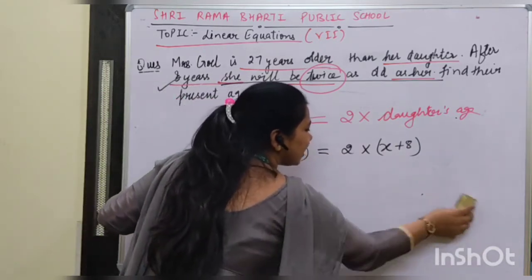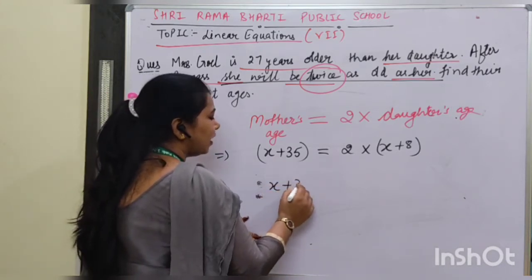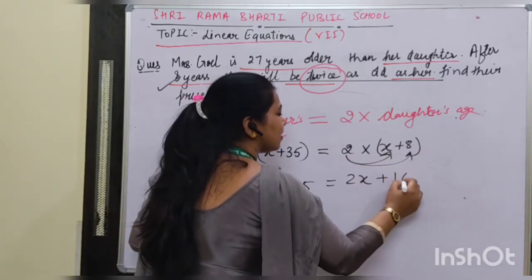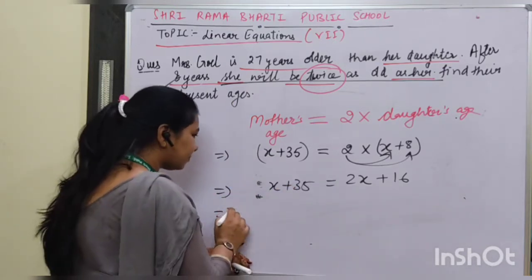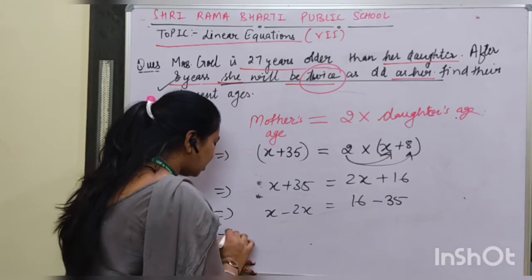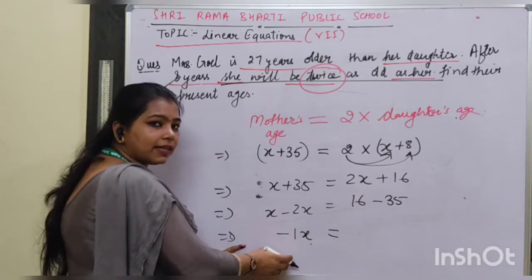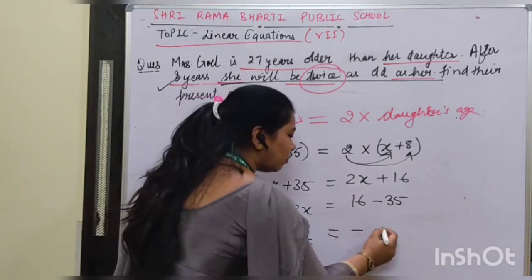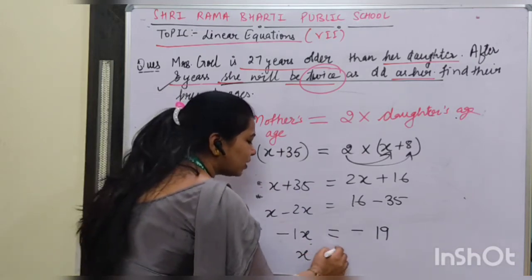Now we proceed with the calculation. Expanding: x plus 35 equals 2x plus 16. We move the variable terms to one side and the non-variable terms to the other. We get x minus 2x equals 16 minus 35, which gives minus x equals minus 19. Therefore, the value of x is 19.